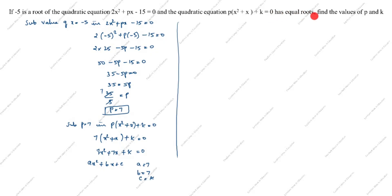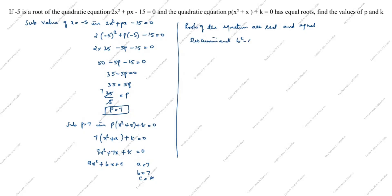The equation has equal roots. Equal roots means the roots are real and equal. The condition for this is that the discriminant b² − 4ac = 0.